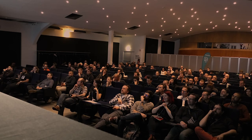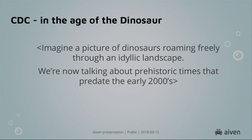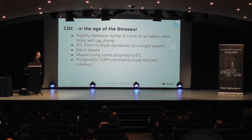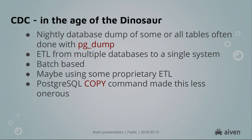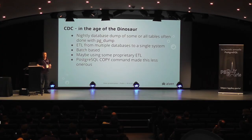Change data capture in the age of the dinosaur — you can imagine dinosaurs roaming freely through an idyllic landscape. This is how it was done in your grandfather's day. This is stuff before the early 2000s: typically when people had data warehouses back then, they would run nightly database dumps of their actual databases, or multiple different databases, and combine them in a nightly batch job. This is a bit of a bummer because if your online transaction processing databases are in the terabyte range, you're copying all the data every night to a data warehouse even if only 1% of the data has changed — you're transferring 99% of the data for no apparent reason.